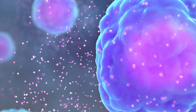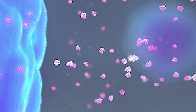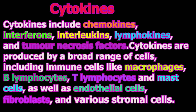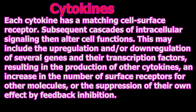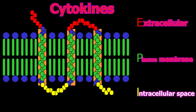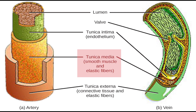In response to injury, local inflammatory cells — neutrophil granulocytes and macrophages — secrete many cytokines into the bloodstream. Cytokines are small proteins important in cell signaling. Due to their size, cytokines cannot cross the lipid bilayer of cells to enter the cytoplasm, so they interact with specific cytokine receptors on the target cell surface. Interleukin-6 is secreted by macrophages in response to specific microbial molecules.